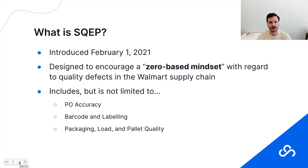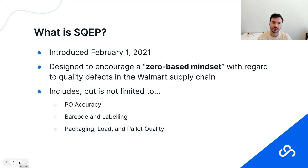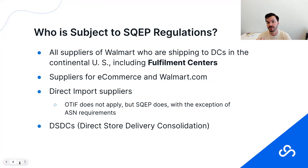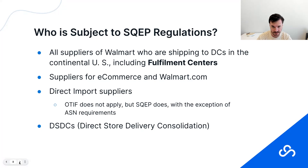SQEP went into effect on February 1st, 2021. It covers three main areas as Walmart has described them: PO accuracy, barcode and labeling, and packaging/load/pallet quality. The zero-based mindset is the mantra of SQEP — really a way of describing Walmart's very high standards for suppliers going forward. With OTIF's 98% on-time and 98% in-full goal, SQEP basically follows up on that, demanding perfection from your supply chain.